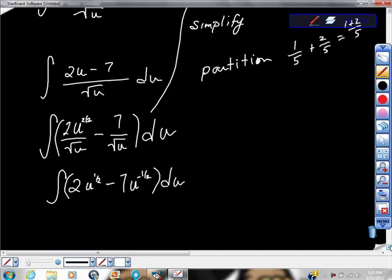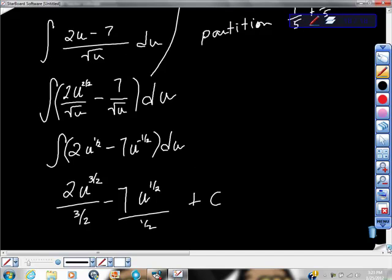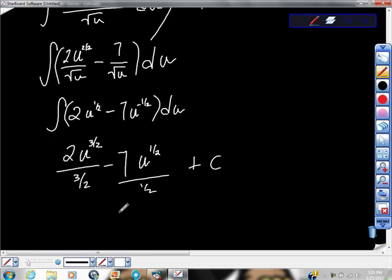I'm going to go ahead and start to integrate here. We get 2u to the 3 halves over 3 halves, minus 7u to the 1 half over 1 half, plus c. Keeping in mind, as we simplify, that this thing comes up as its reciprocal, as does this.